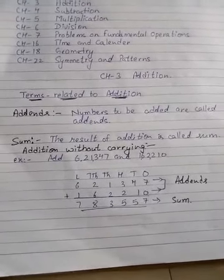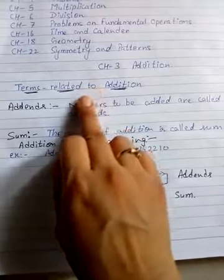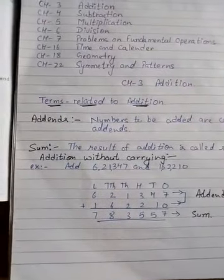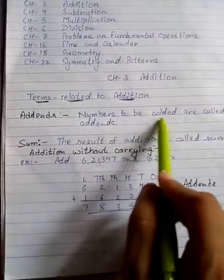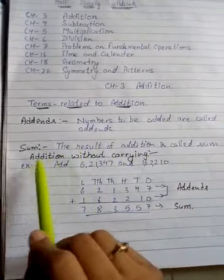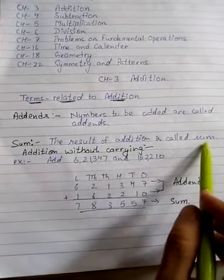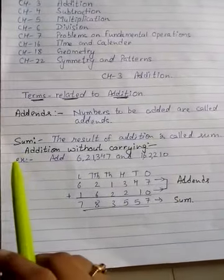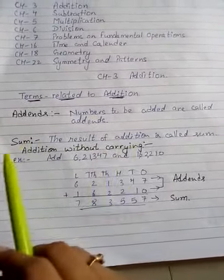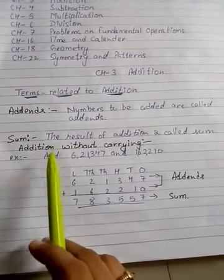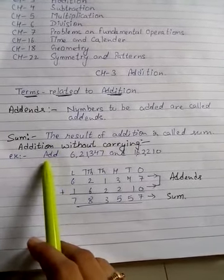First of all, addition. Till this date you have learned about addition, but you don't know the terms related to addition. Addends means the numbers to be added are called addends. Sum - the result of addition is called sum. So there are two kinds of addition: addition without carrying and addition with carrying.